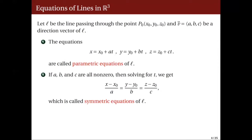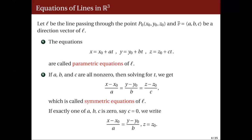Note that we can only form symmetric equations if all of a, b, and c are non-zero. In the case that one of them is zero — say c equals zero — the third parametric equation simply gives z equal to z0, so the symmetric form becomes (x minus x0) over a equal to (y minus y0) over b, together with z equal to z0.